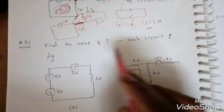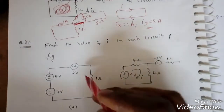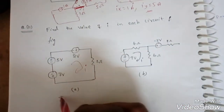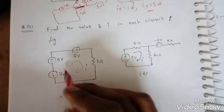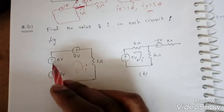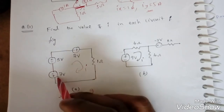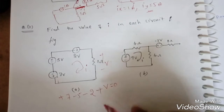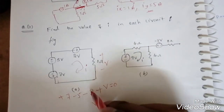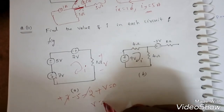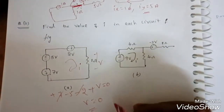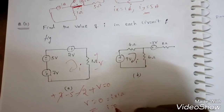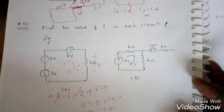The next problem asks us to find I in each circuit. Applying KVL: plus 7 - 5 - 2 - V = 0, so V = 0. Since V = I × R and R = 1 ohm, I = 0. That means no current is flowing in this circuit.